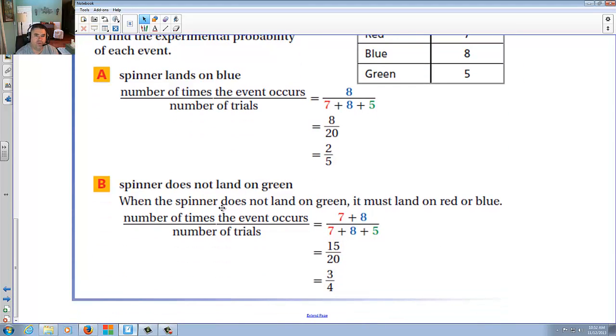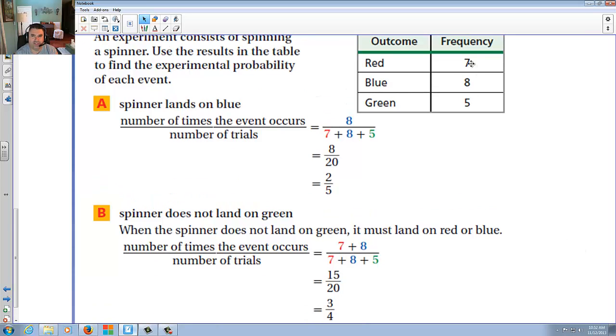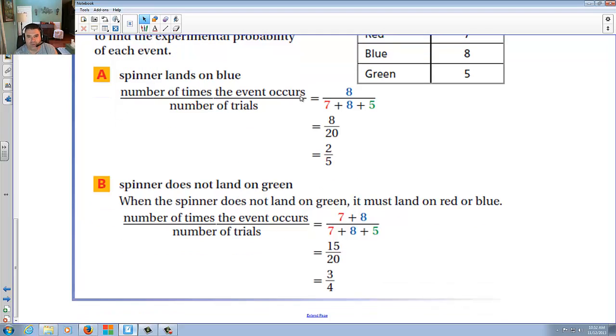Spinner does not land on green. When the spinner does not land on green, it must land on blue or red. So again, it's saying when it doesn't land on green, so it's seven plus eight is 15, so 15 out of 20, which makes three-fourths. So three-fourths of the time, it did not land on green.